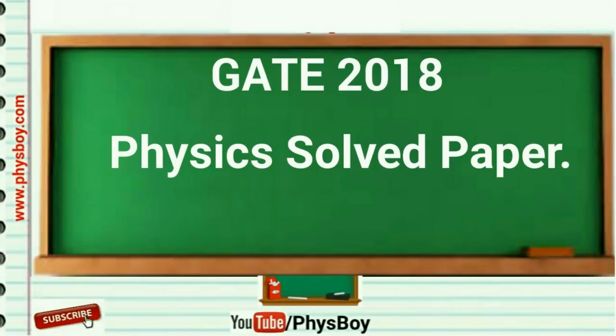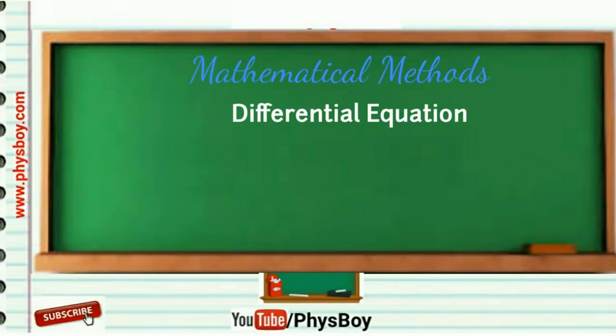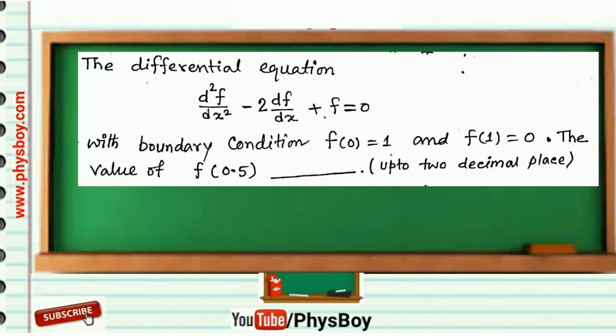Now I am going to share a question related to differential equation. The given differential equation is d²f/dx² - 2df/dx + f = 0 with boundary condition f(0) = 1 and f(1) = 0. The value of f(0.5) will be determined up to two decimal places.